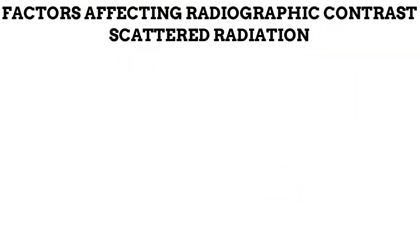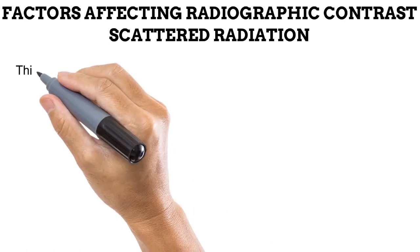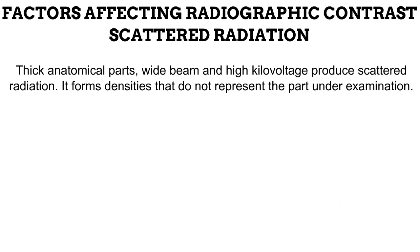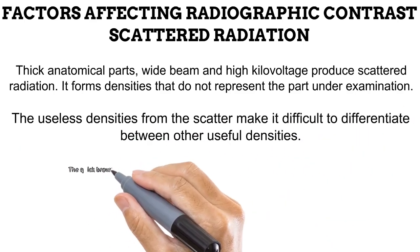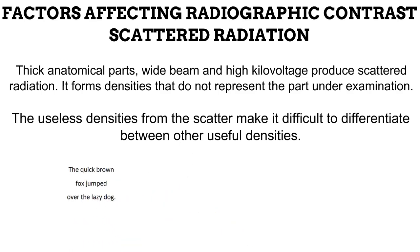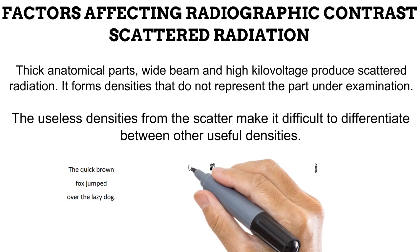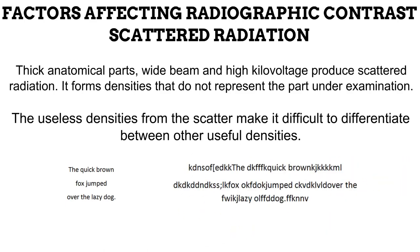Next is scattered radiation. Thick anatomical parts, a wide beam, and high kilovoltage produce scattered radiation, which forms useless densities that do not represent the anatomy under examination. These useless densities reduce radiographic contrast by making it difficult to differentiate useful densities from each other. Think of it as a sentence written clearly — it is easy to read. But if useless characters are introduced around it, even though the useful sentence is still there, it is much harder to make out. This is the same effect scattered photons have on radiographic contrast, meaning any effort to reduce scatter will increase radiographic contrast.